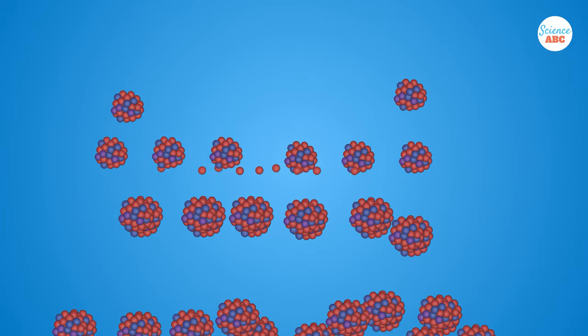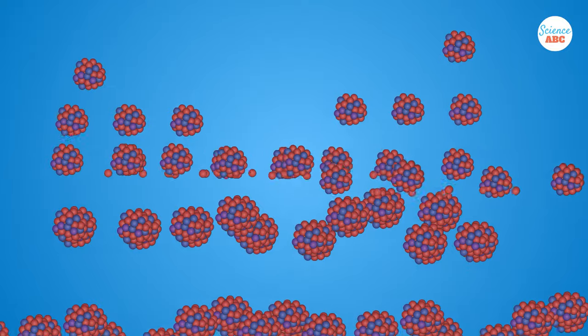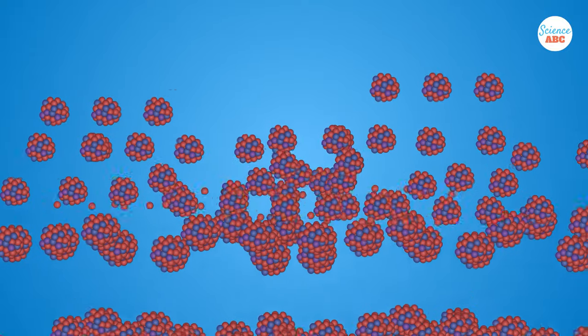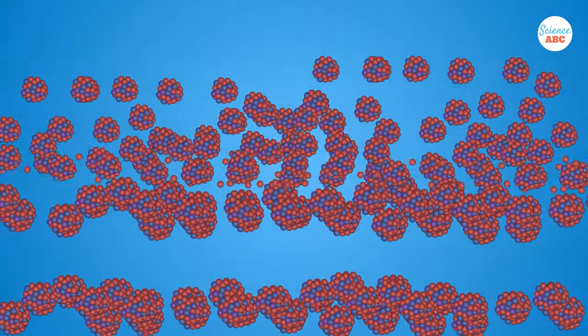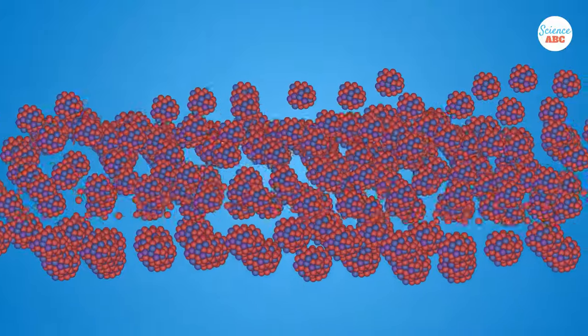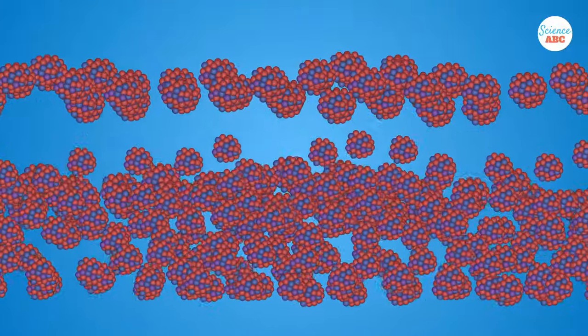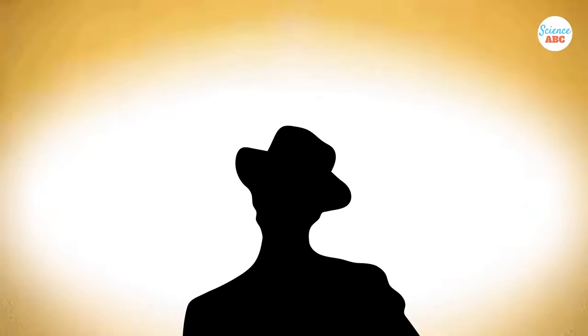Now imagine if you had a few extra uranium atoms floating around. Neutrons from the first fission reaction would collide with this uranium, creating another fission reaction, and then another, and another, until the uranium runs out. All the while, huge amounts of energy are being released.